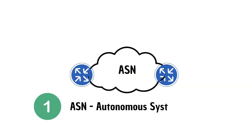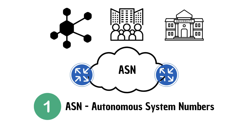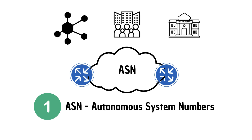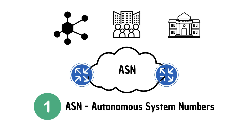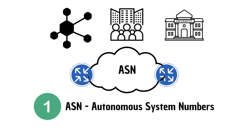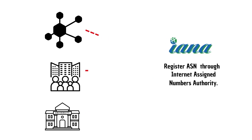Each AS typically consists of ISPs or other large organizations such as tech companies, universities, government agencies, and scientific institutions. Any organization that wishes to exchange routing information must have a registered autonomous system number.